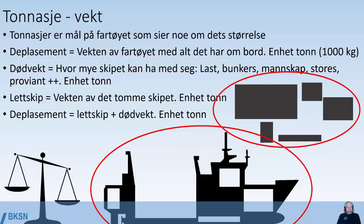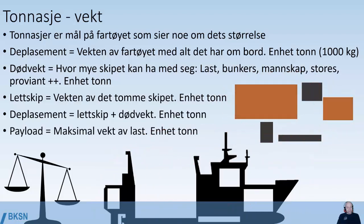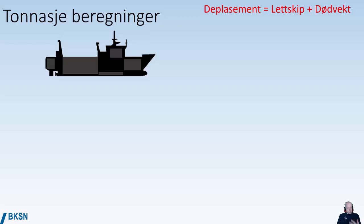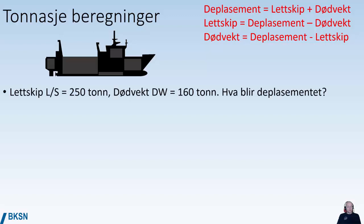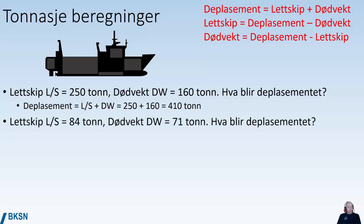Displacement equals light ship plus dead weight, and unit is tons for all of them. Payload is the maximum weight of cargo the ship can carry, also in tons. For calculations: displacement equals light ship plus dead weight; light ship equals displacement minus dead weight; dead weight equals displacement minus light ship. For example, with a light ship of 250 tons and a dead weight of 160 tons, the displacement is 410 tons. With a light ship of 84 tons and a dead weight of 71 tons, the displacement is 155 tons.